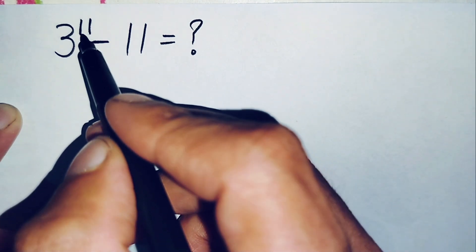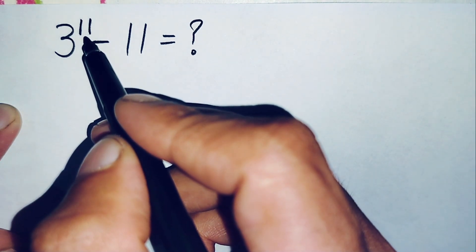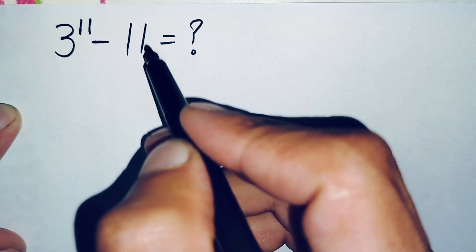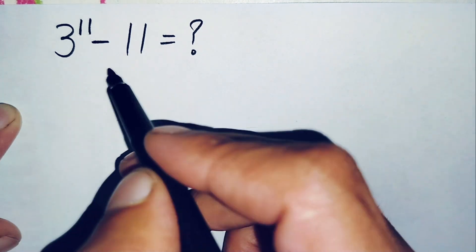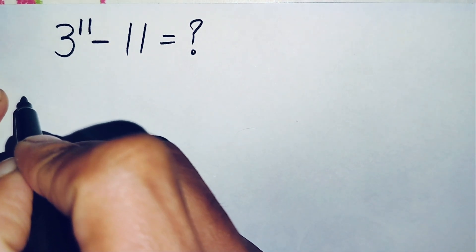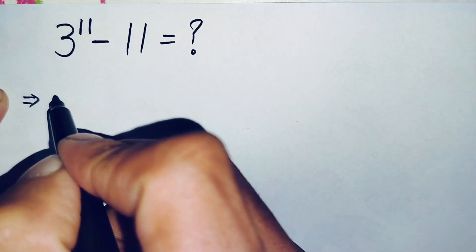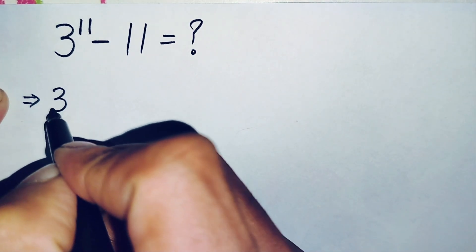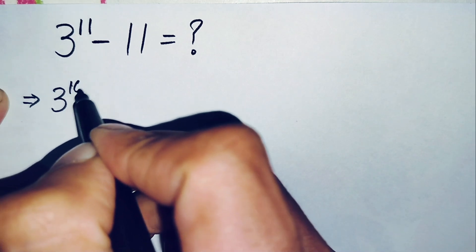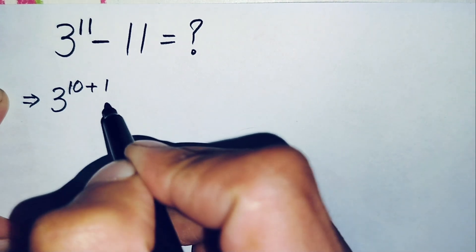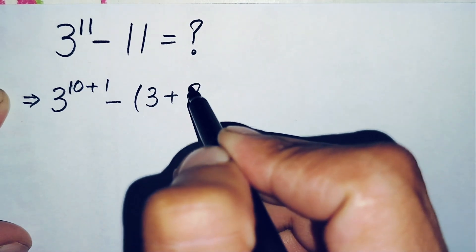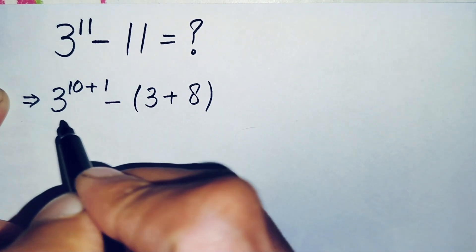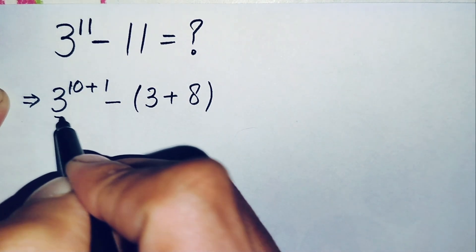First of all, we will change this power 11 to the sum of 10 plus 1, and we will change this number 11 to the sum of 8 plus 3. So this equation will become: we replace these two numbers — this will come to 3 to the power (10 plus 1) minus (8 plus 3).